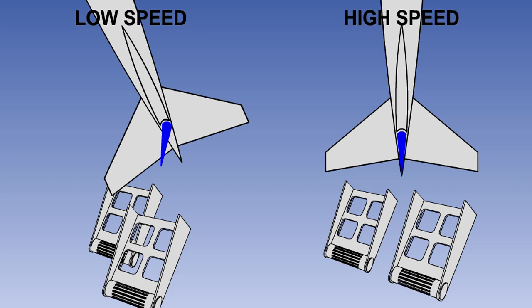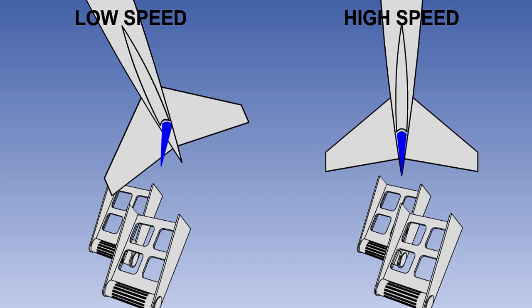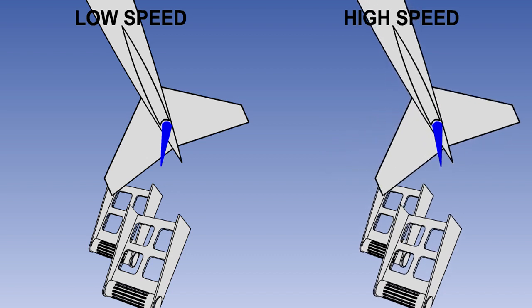To prevent this occurrence, a gear change system known as a rudder ratio changer may be incorporated into the rudder control system. This may be a single gear change which gives a smaller rudder deflection for full pedal movement above a certain speed, or a progressive gear change which gives a decreasing rudder deflection with full pedal movement as speed increases.